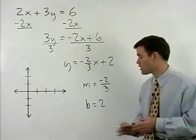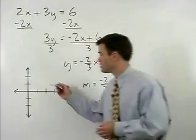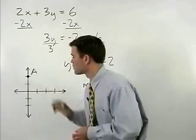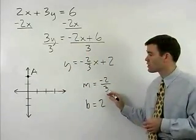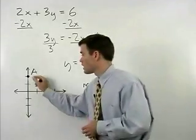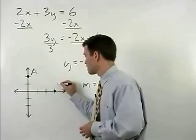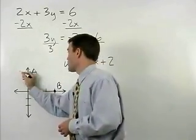To graph the line we would start with its y intercept of 2, up 2 units on the y axis. From there we take our slope of negative 2 thirds. So we go down 2 and to the right 3 to plot our second point and we graph the line.